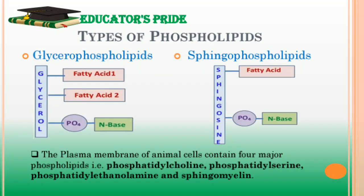Mainly two types of phospholipids are present in plasma membranes. First, glycerophospholipids, in which two fatty acids are joined to glycerol. Second, sphingophospholipids, in which a single fatty acid is attached to sphingosine. Glycerophospholipids are the most abundant class of lipids in most membranes. The plasma membrane of animal cells contains four major phospholipids: phosphatidylcholine, phosphatidylserine, phosphatidylethanolamine, and sphingomyelin.